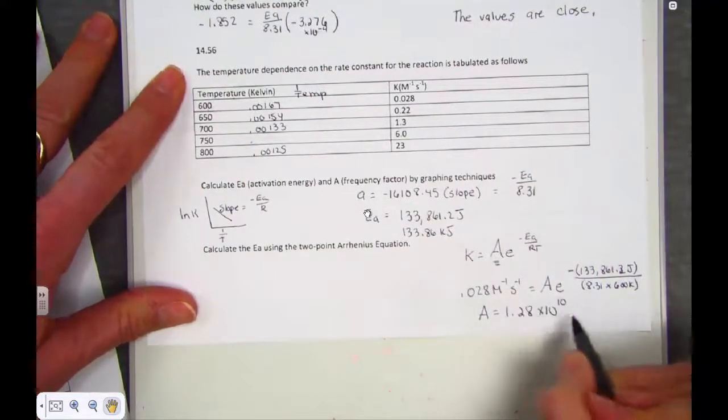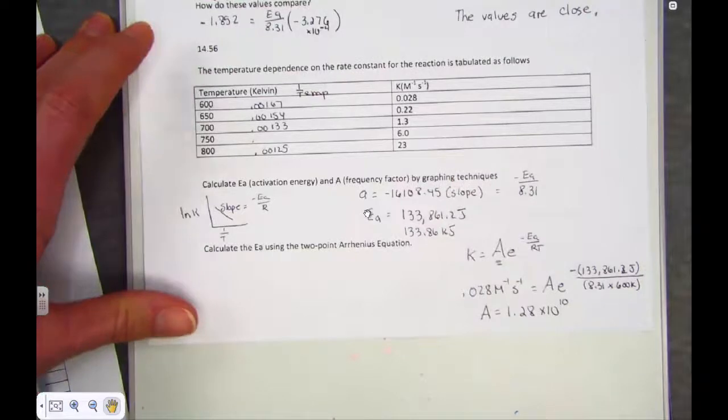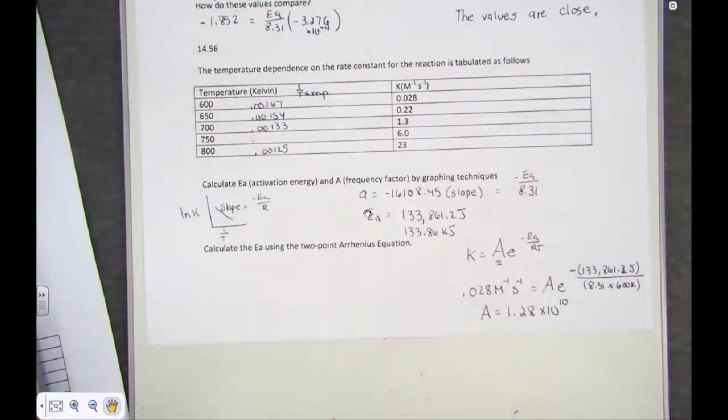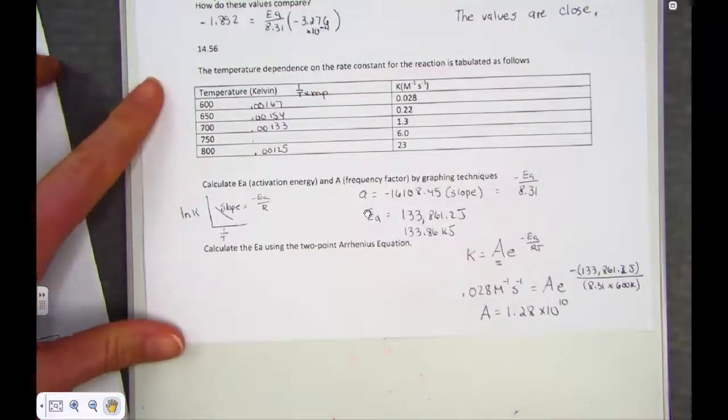A little over a billion. 12 billion molecules are meeting the criteria of energy and orientation. This is a number telling us how many molecules are being successful in their collision orientation and with their energy barrier.